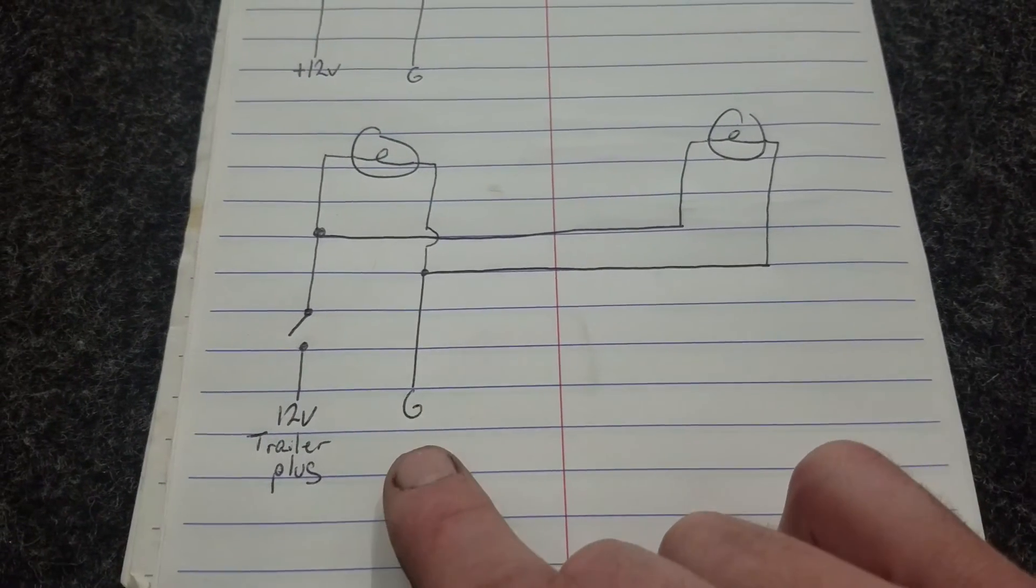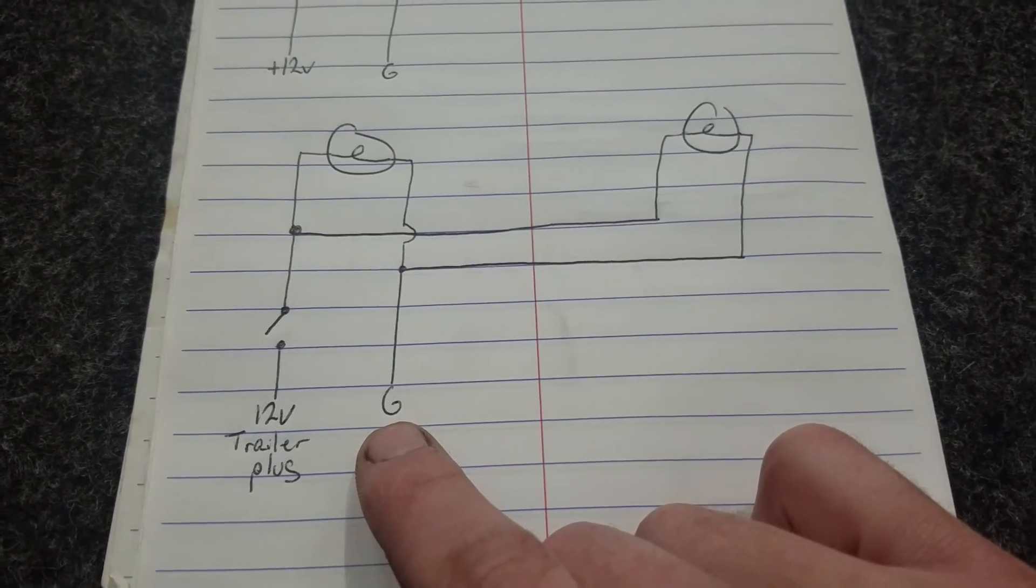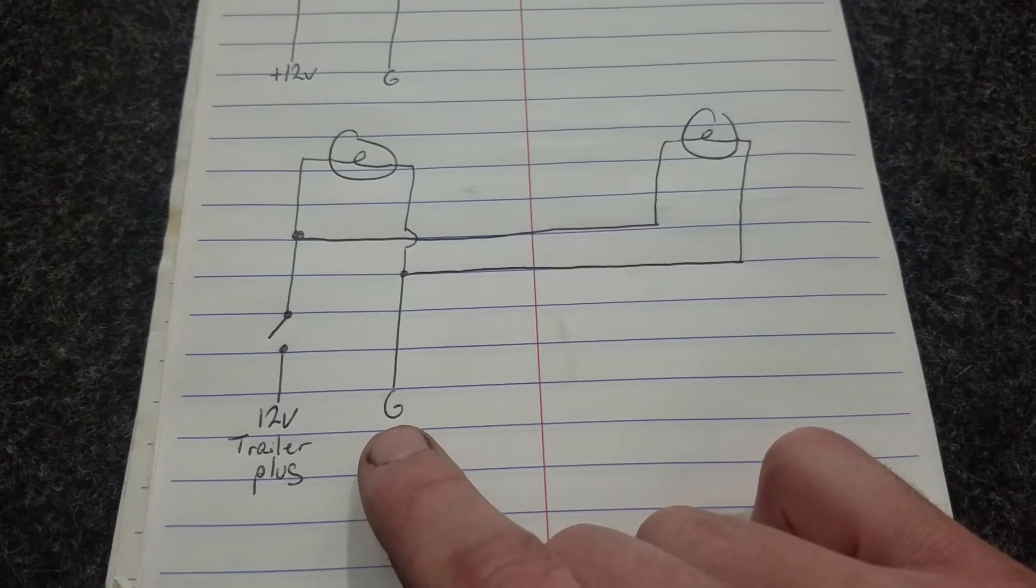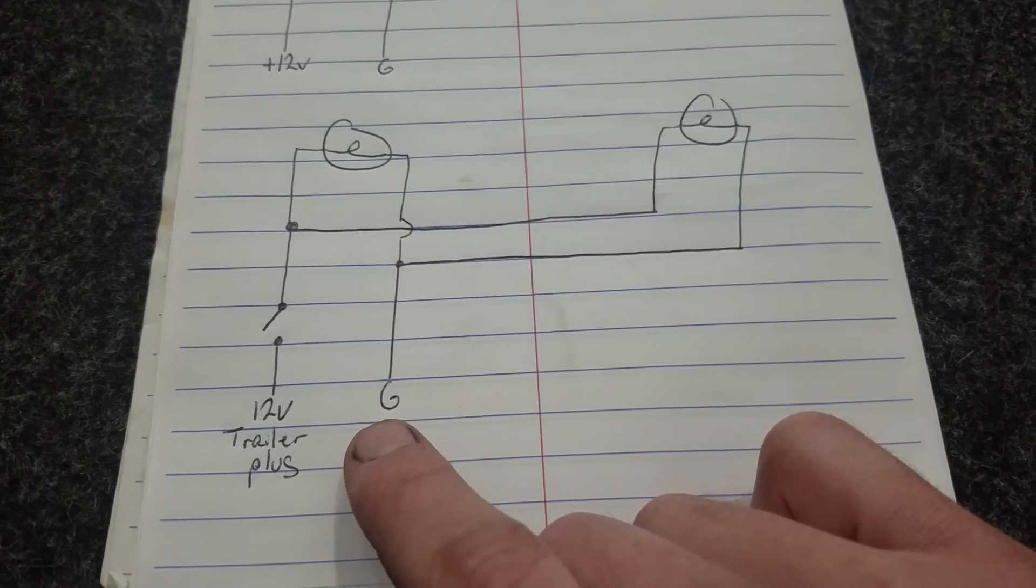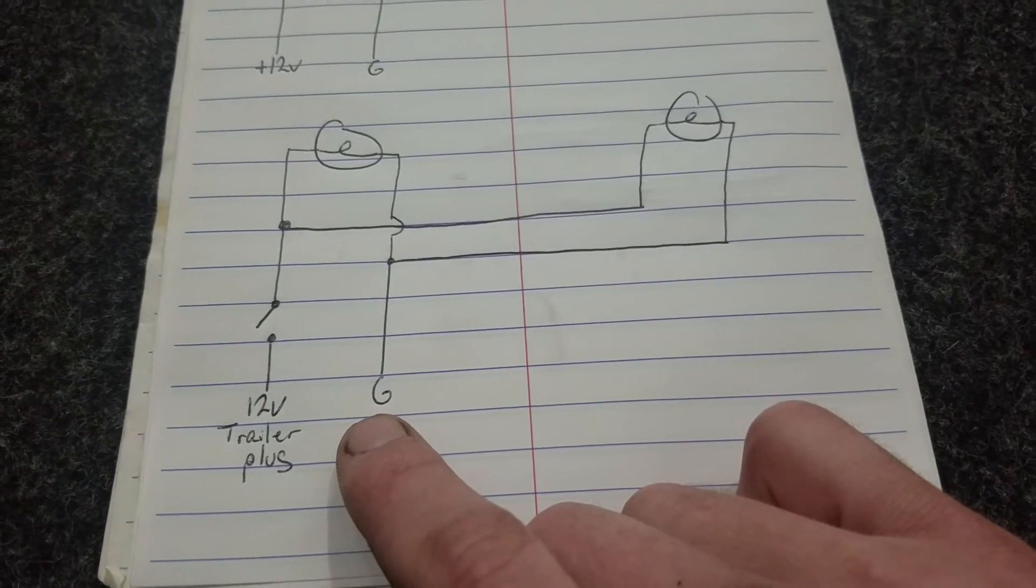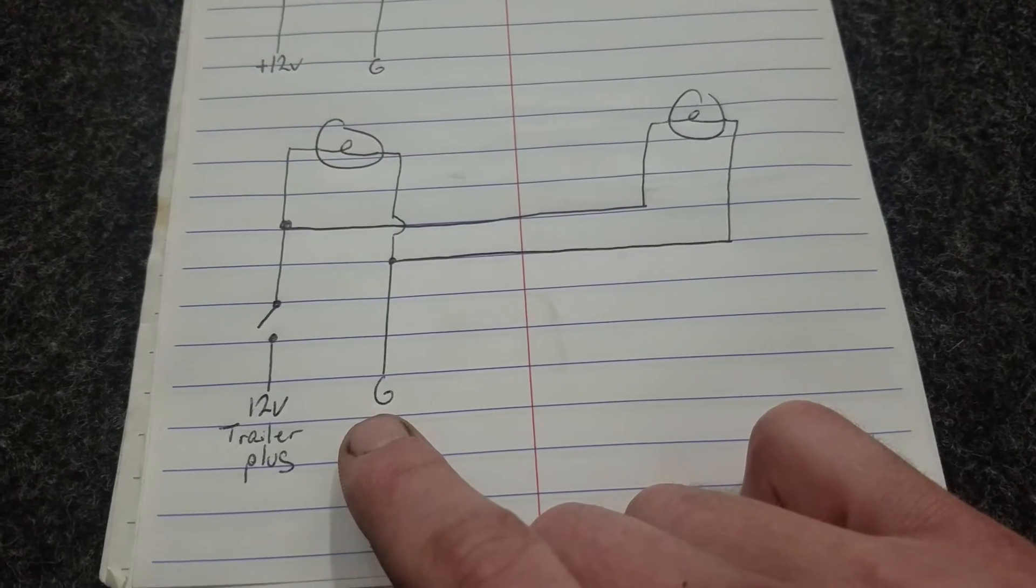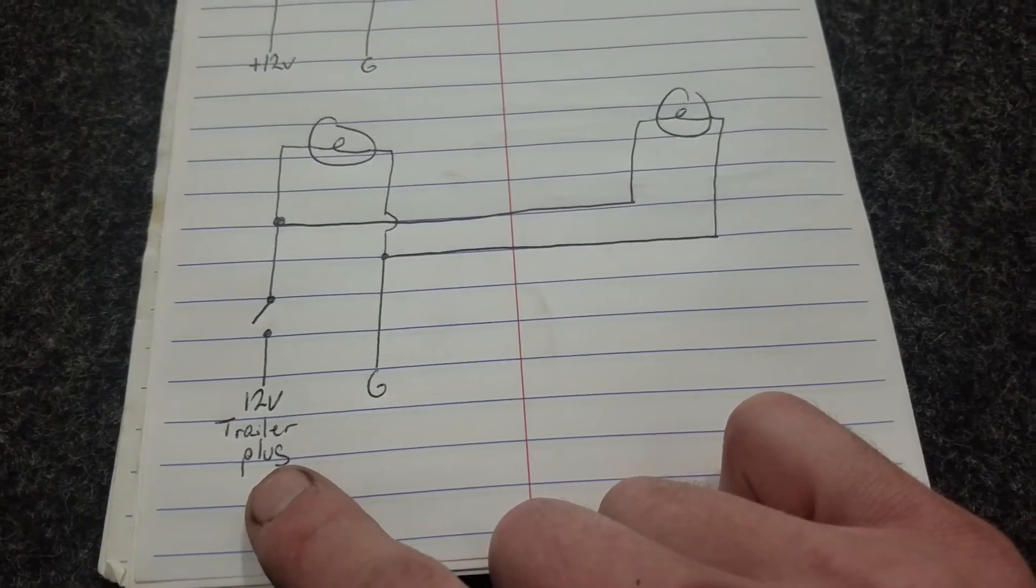The only other thing you're going to have to try and find is a ground, which you can find a regular chassis ground that's already used and just tie into that, or create your own ground somewhere on the frame or body. That's totally up to you. But as far as how the stuff's wired, it's going to be very similar. The main thing is where you're going to pull your power from.